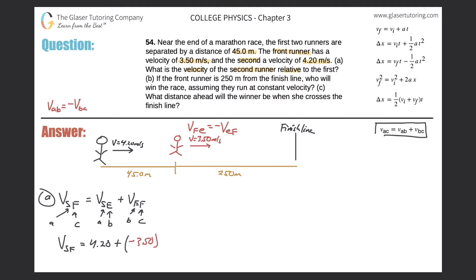So remember this little truth that the velocity of AB will always equal negative velocity of BA. So if I know the velocity of the first runner relative to the earth, then that means that I also know the velocity, which is just the inverse of it, the negative version of it, of the velocity of the earth with respect to the first runner. So the term here is actually going to be 3.50, but negative. And now you can see how the math is going to just work out. So we've got 4.2 minus 3.5, and that's 0.7.